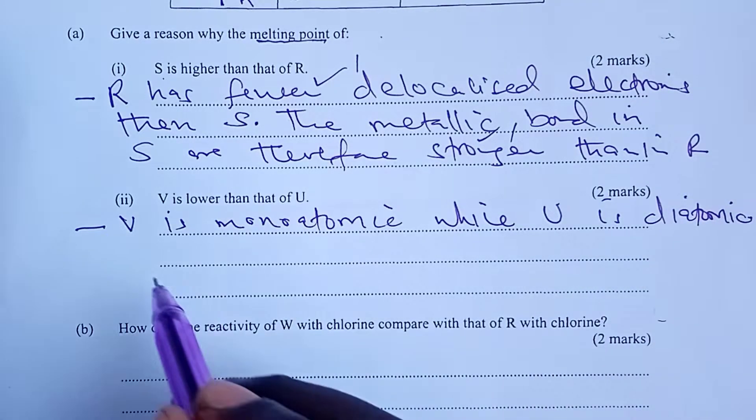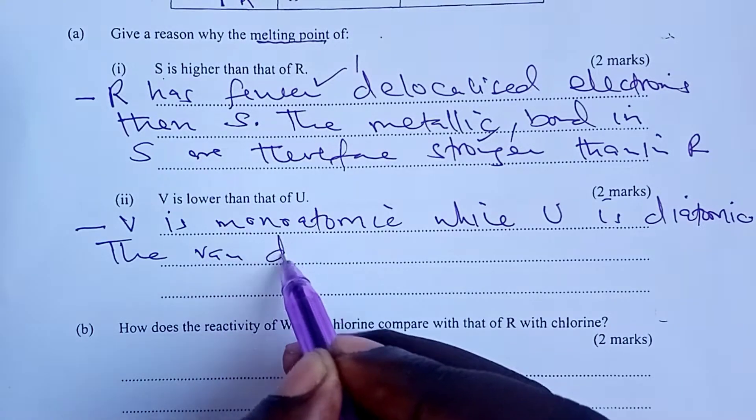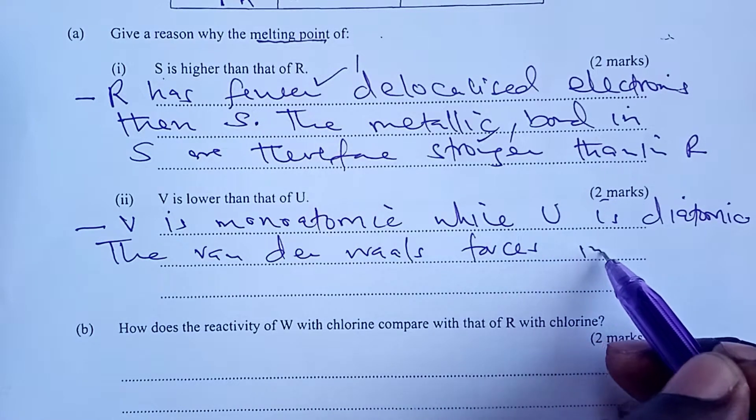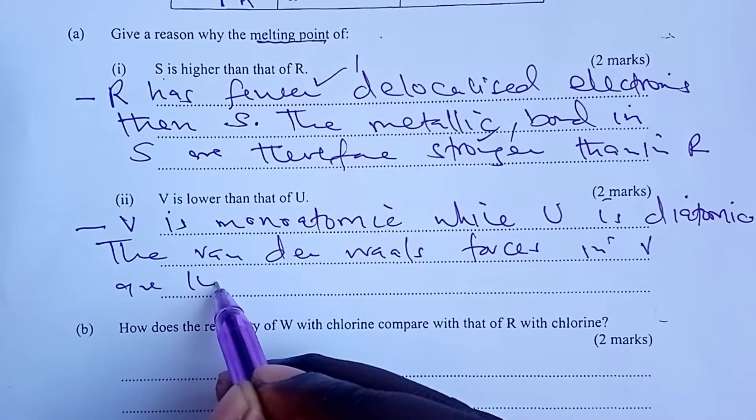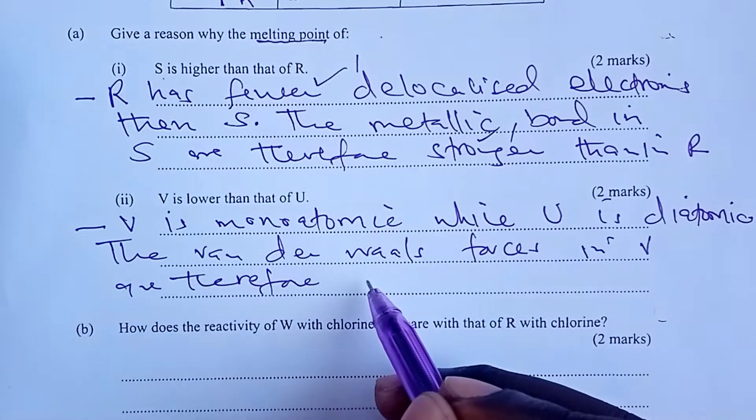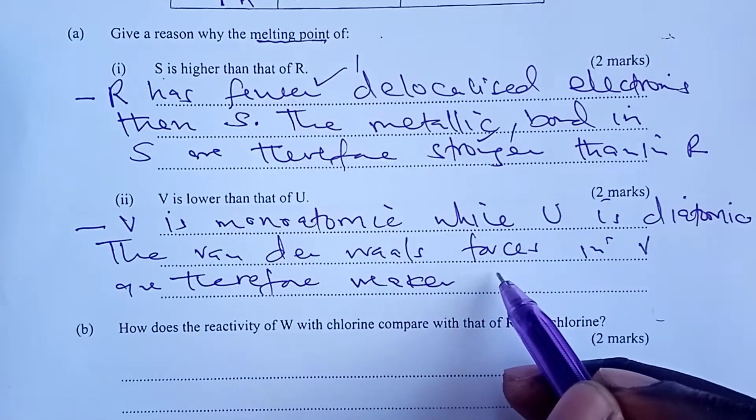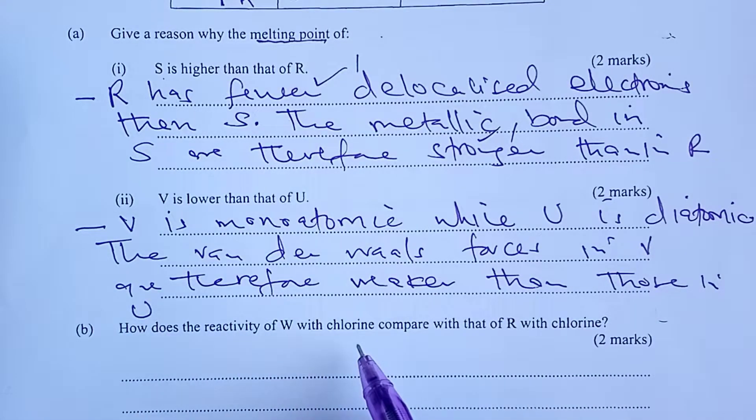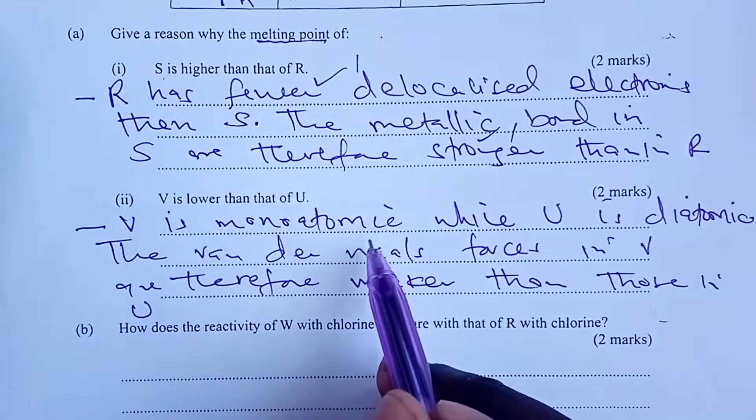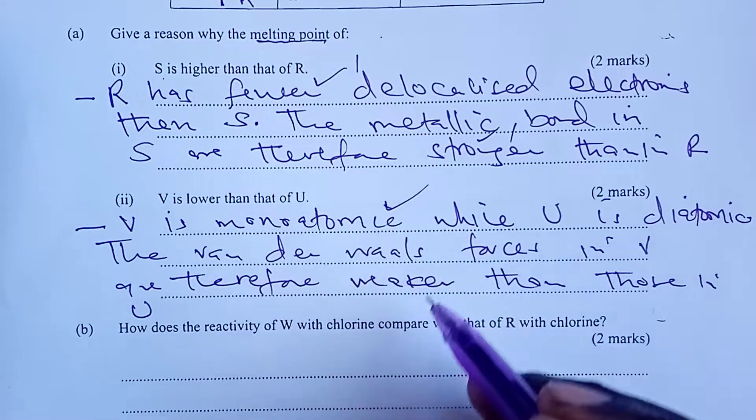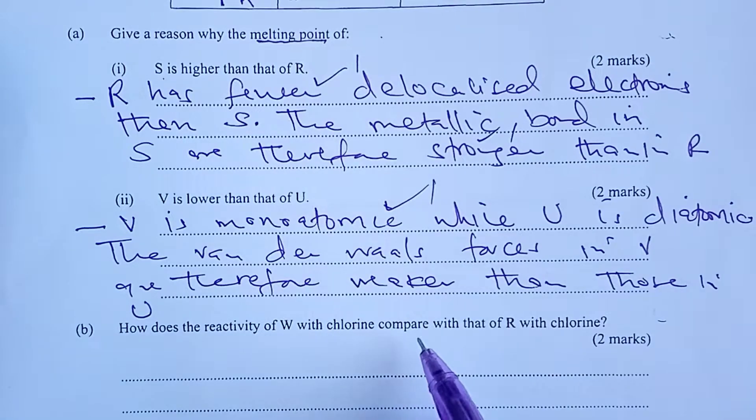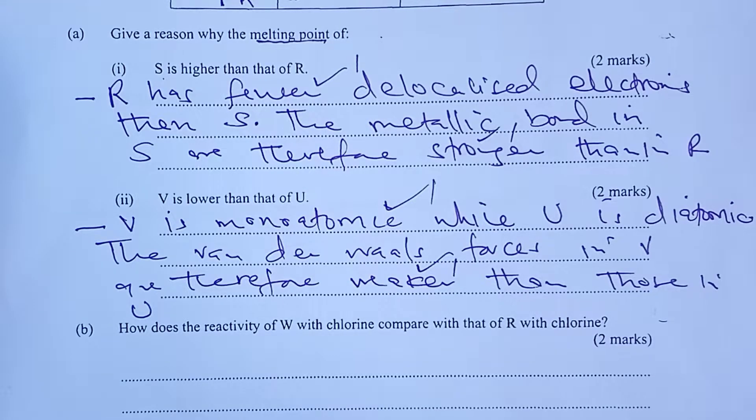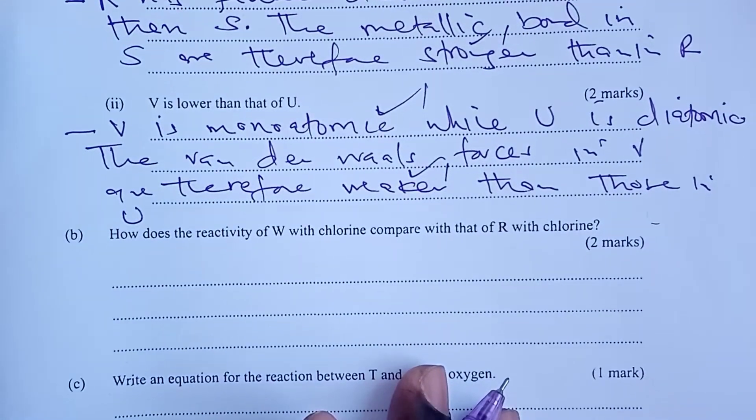Here, we were supposed to answer that V is monoatomic, while U is diatomic. What happens next? The van der Waals forces in V are therefore weaker than those in U. For you to score two marks—differentiating between V and U in terms of number of atoms per molecule, one mark, and then comparing the van der Waals forces again for the next mark. Total, two.